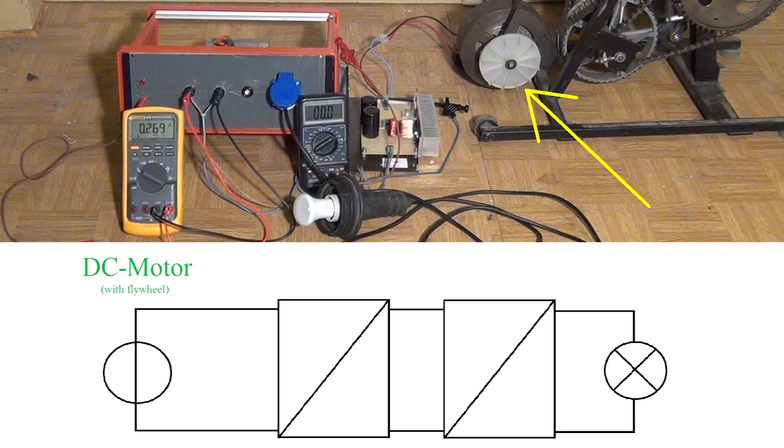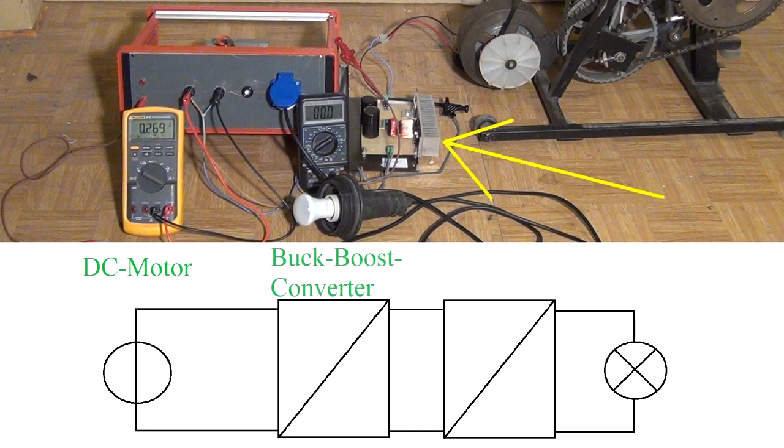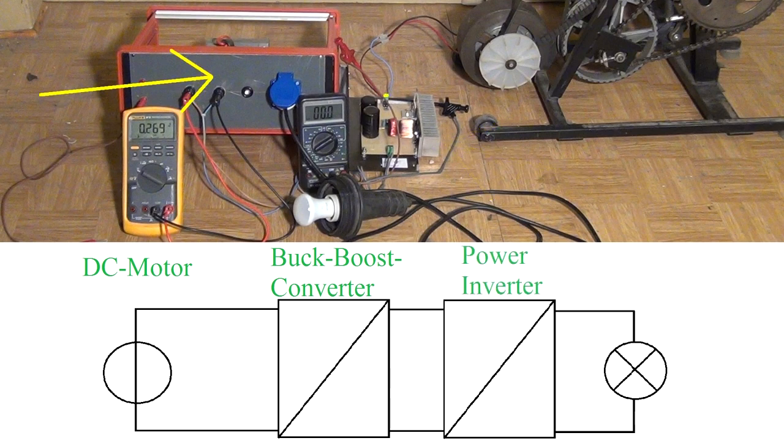The output of the generator is connected to a so called buck boost converter. Its output is then fed to a power inverter which is finally driving the load. Why is this necessary? Why can't you just attach the load directly to the generator? Well you can but it's completely unpractical.